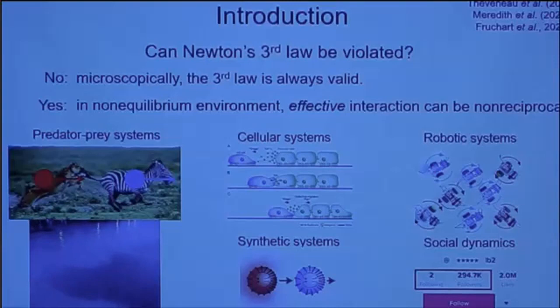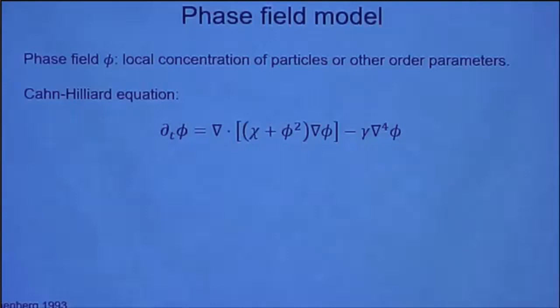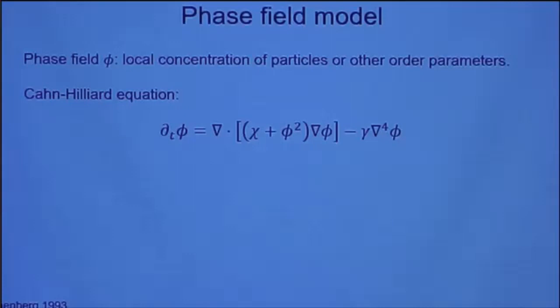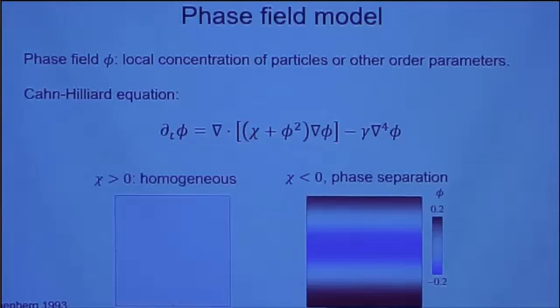So what can happen in such systems? Today I show you one simple example. For simplicity and to highlight the effect of non-reciprocity, we use a very simple phase field model — a Cahn-Hilliard framework. The phase field phi characterizes the local concentration of a particle. The parameter chi controls the phase transition or phase separation of the system: for positive chi, the steady state is homogeneous, and for sufficiently negative chi, the system spontaneously phase-separates into regions of high and low concentration.